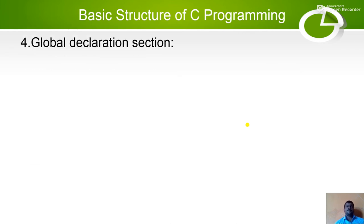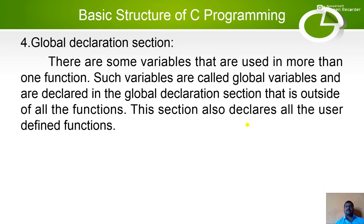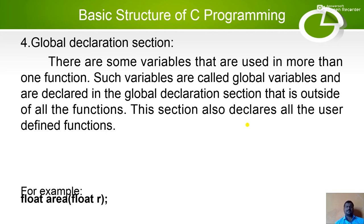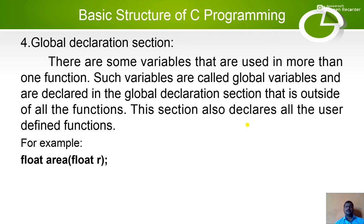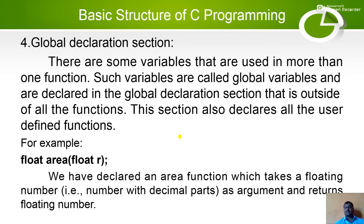The fourth section is the global declaration section. There are some variables that are used in the global declaration section — that is, outside of all the functions. This section also declares all the user-defined functions. For example: float area(float r); — these are examples of a global declaration section. We have declared an area function which takes a floating point number as an argument and returns a floating point number.